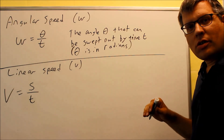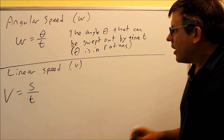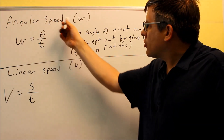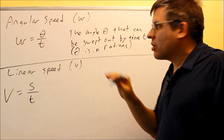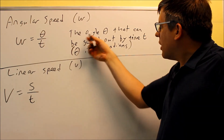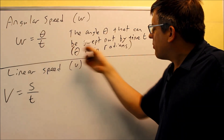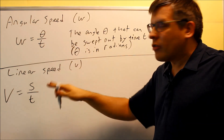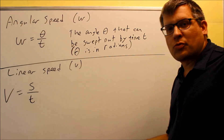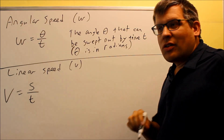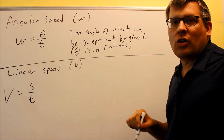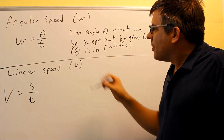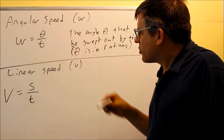We're going to talk about another application of angles: angular speed and linear speed. Angular speed uses the Greek letter omega, and it represents the angle theta swept out over time t. It's how much angle is covered over a certain amount of time — it might be revolutions per minute, or maybe 30 radians in one second. Your theta is usually given in terms of radians.